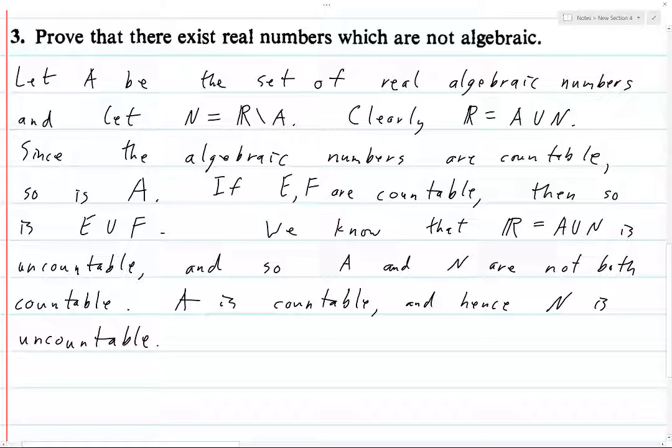We know that R, which can be written as A union N, is uncountable. And so we're basically doing, the contrapositive of this says that if E union F is not countable, then it is not the case that E and F are both countable.